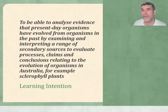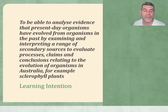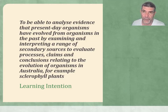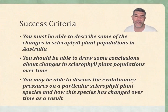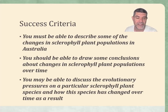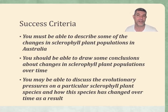Our learning intention is the same as the large one we recently looked at for the Australian small mammals. We're going to look at how we can interpret information from secondary sources to evaluate processes, claims, and conclusions relating to the evolution of organisms in Australia, with a focus on sclerophyll plants. You must be able to describe some of the changes in sclerophyll plant populations and define what sclerophyll plants are. You may be able to draw conclusions about changes in populations over time, and perhaps discuss some of the evolutionary pressures that have contributed to significant adaptations in Australian native plant species.